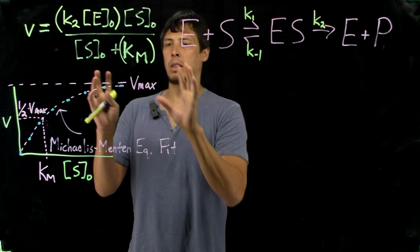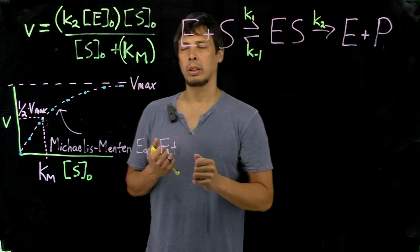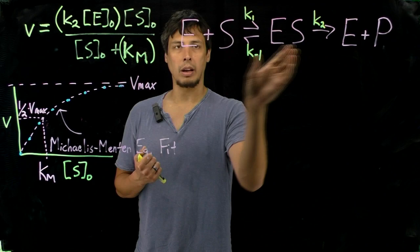So what those mean, once again, is that Vmax is this asymptote. So this is the highest velocity that can be achieved when all of the sites are saturated.